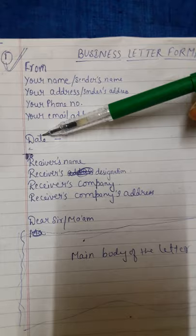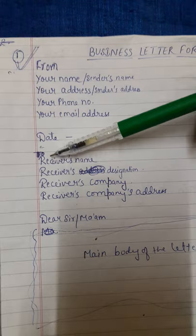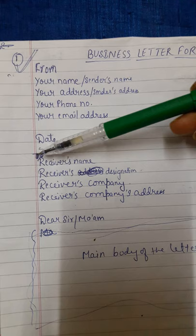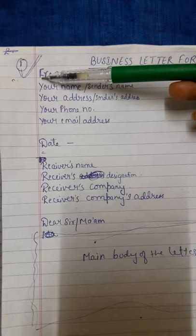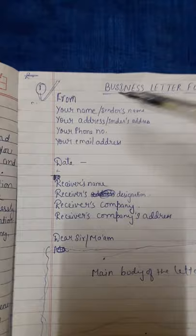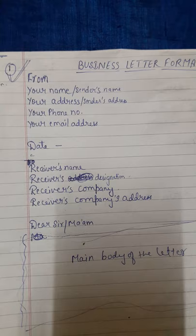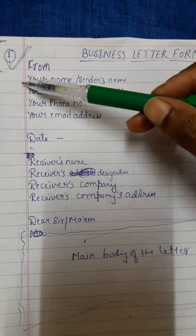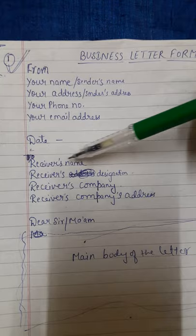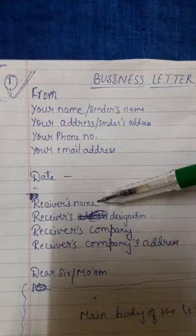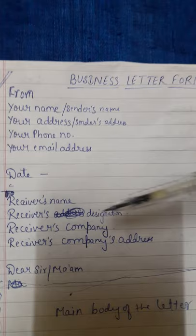After the sender's information, leave a single space and write the date on which you are writing the letter. Then again leave a single space and write the receiver's information. You can skip writing 'To' and 'From' if you wish, since it's a fixed universal format and it is understood that the sender's information is at the top and the receiver's information follows. First, write the name of the receiver.